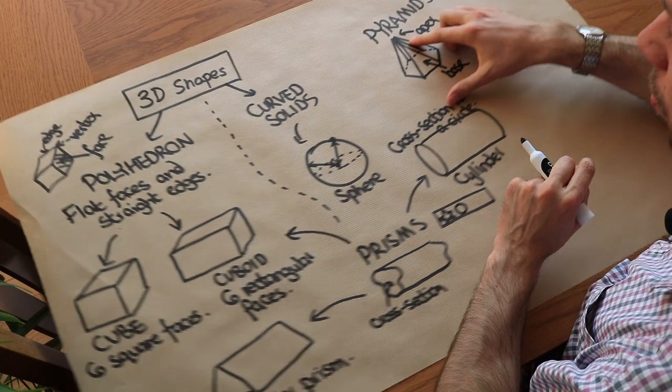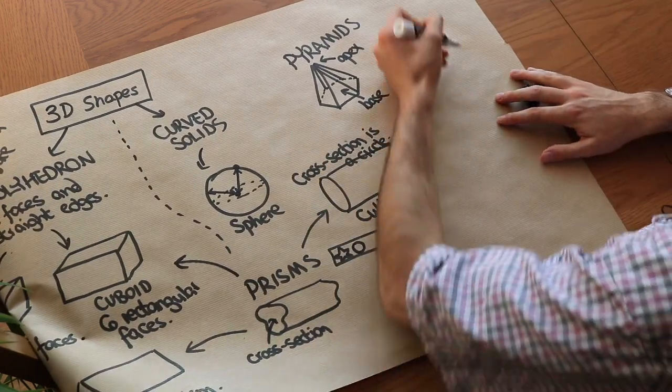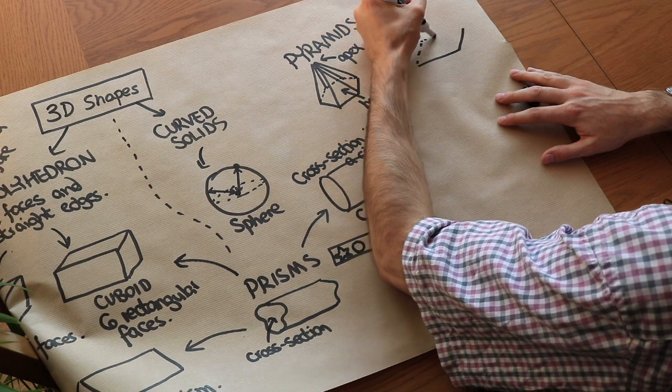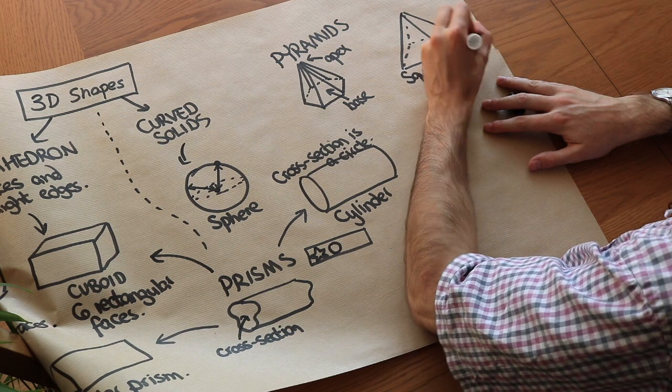Now pyramids could be curved or they could be polyhedron. So a pyramid that would be a polyhedron for example would have a square base. So if we had a square base pyramid that's known as a square base pyramid because it has a square base obviously.